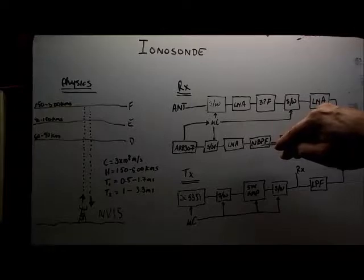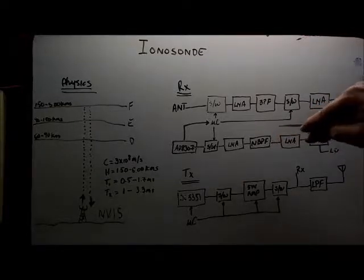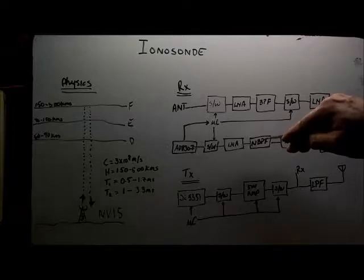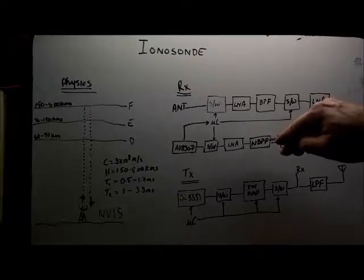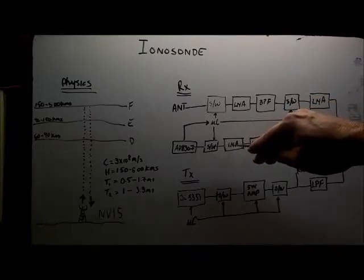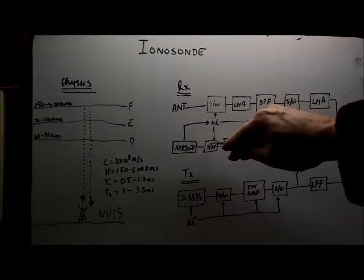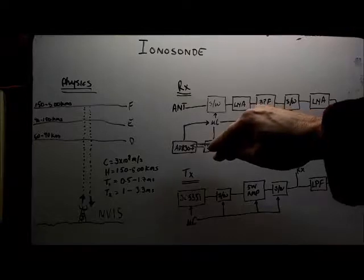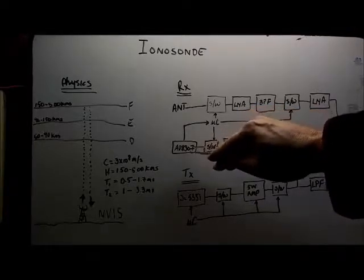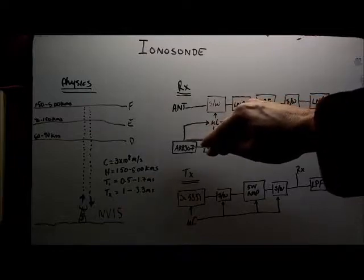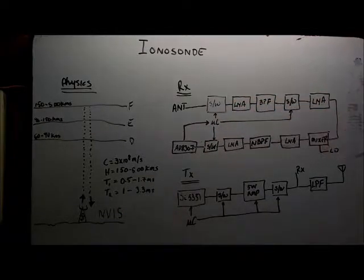The output from the mixer will be fed to a low noise amplifier and then a narrow bandpass filter. I'll be using a crystal filter here, using 4.9 megahertz crystals, so the IF will be 4.9 megahertz. That'll feed into another low noise amplifier and there'll be a final switch, a pin diode switch which feeds into an 8307 log amp. The microcontroller ADC will be taking readings from that to see whether a signal is present.